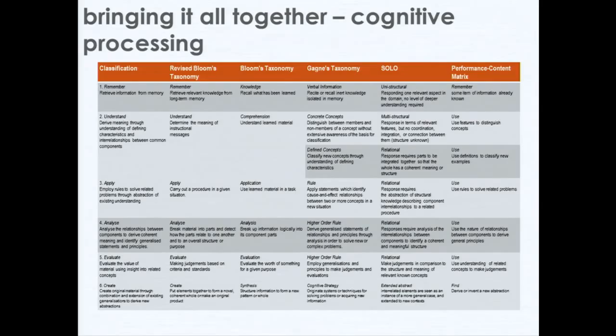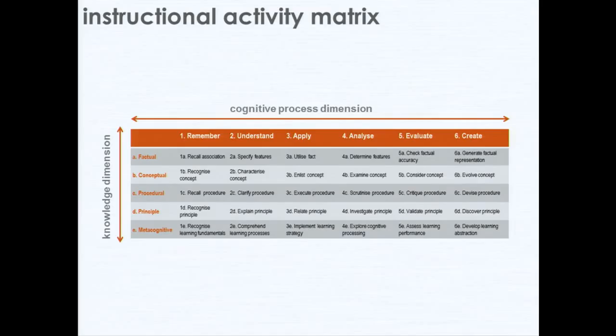So what we did was bring it all together. We ended up with essentially five classification components of knowledge — facts, concepts, procedurals — taking the principles of Merrill and the metacognitive knowledge of the revised Bloom's taxonomy, treating that as a level of information processing that students would need to demonstrate. We also looked at the epistemological basis — are they understanding basic content or conceptual high-level and metacognitive types of knowledge? We pulled it together into what we call the Instructional Activity Matrix.